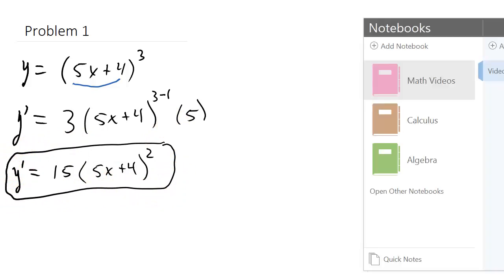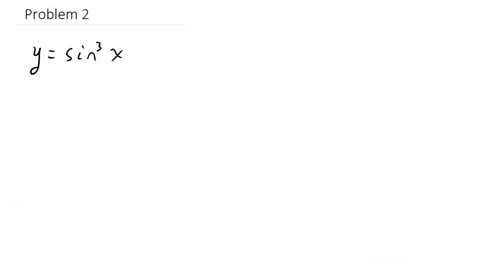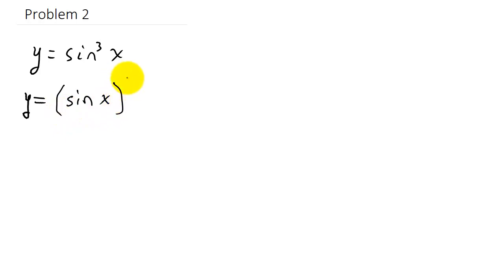Let's take a look at another one. We have y equals sine cubed x. The best way to look at this is to rewrite it as y equals sine x all cubed — sine cubed x can be written as sine x, all of that, to the third power. So our exponent is 3, and our u in this case is sine x.